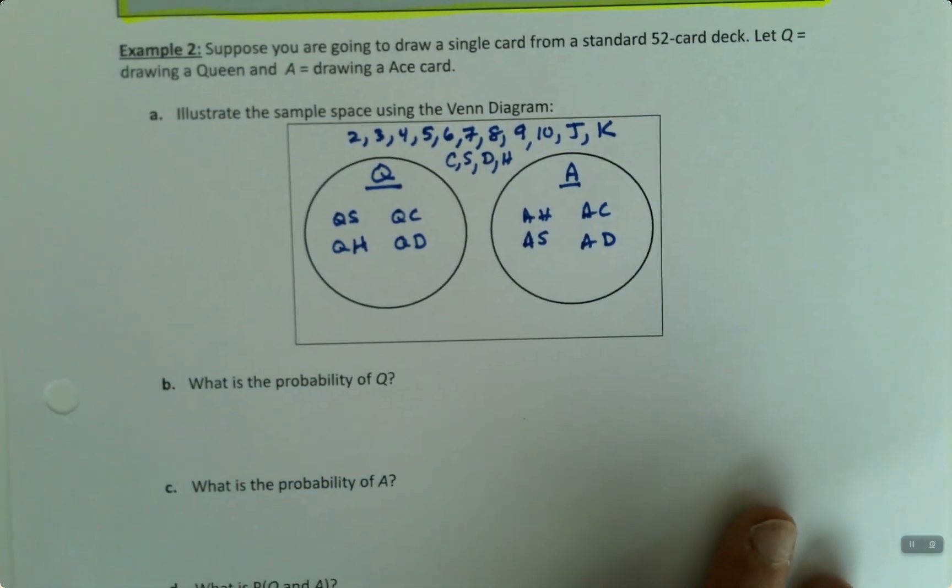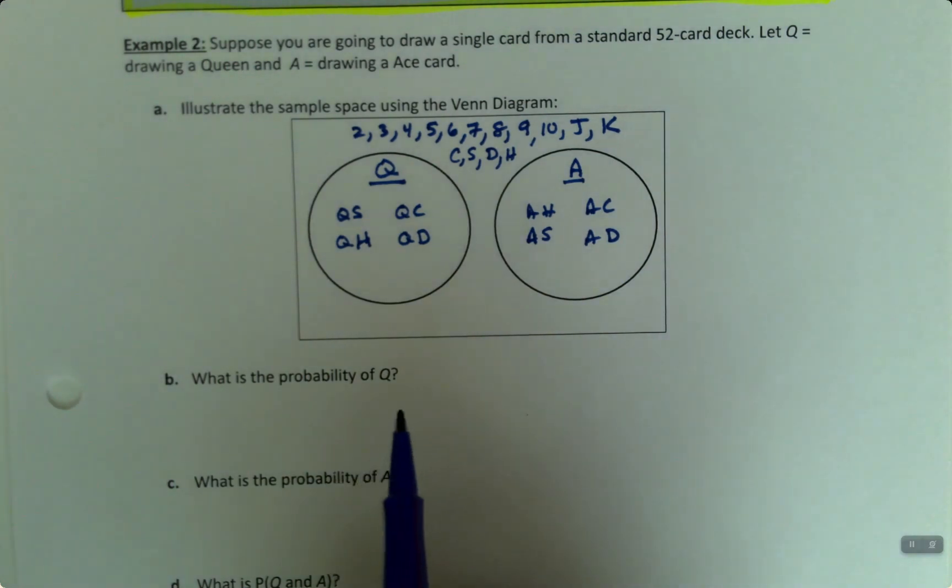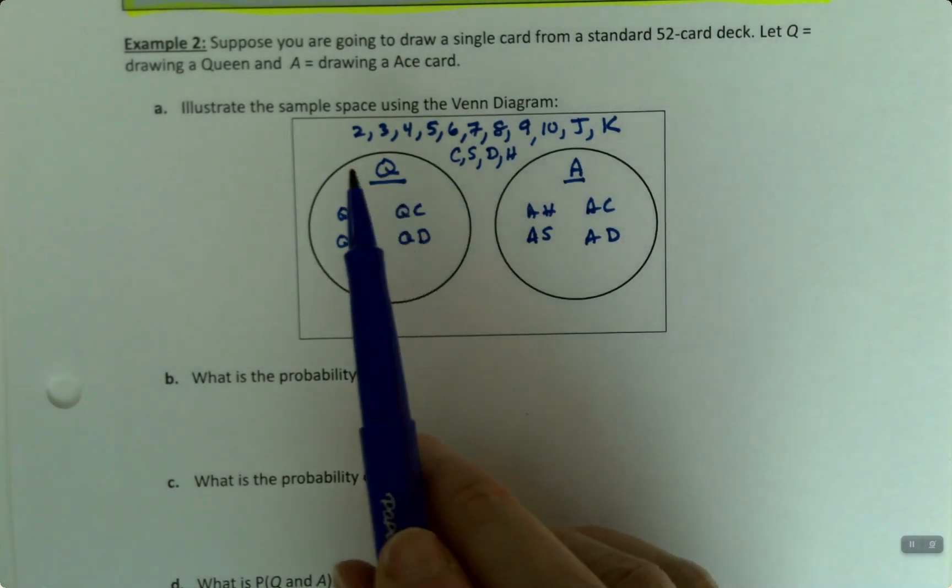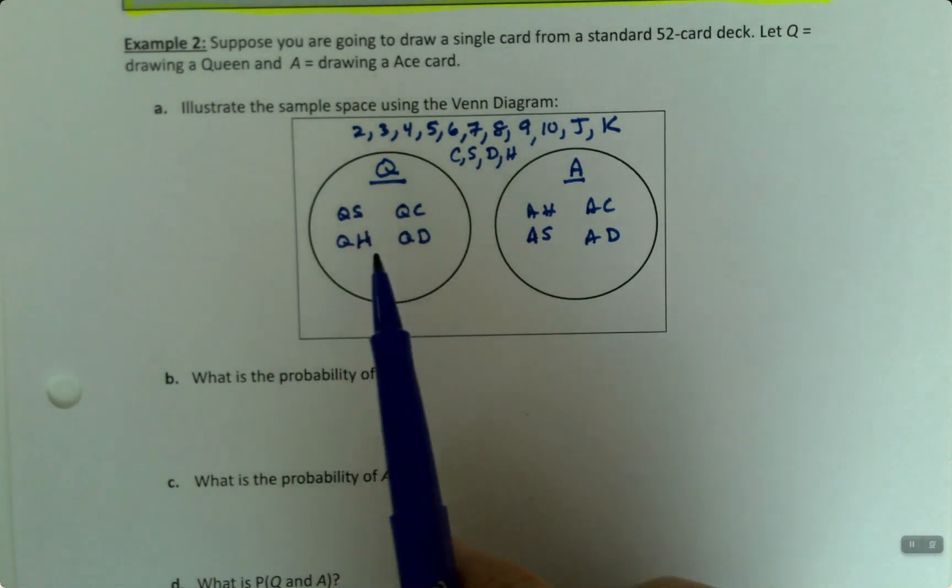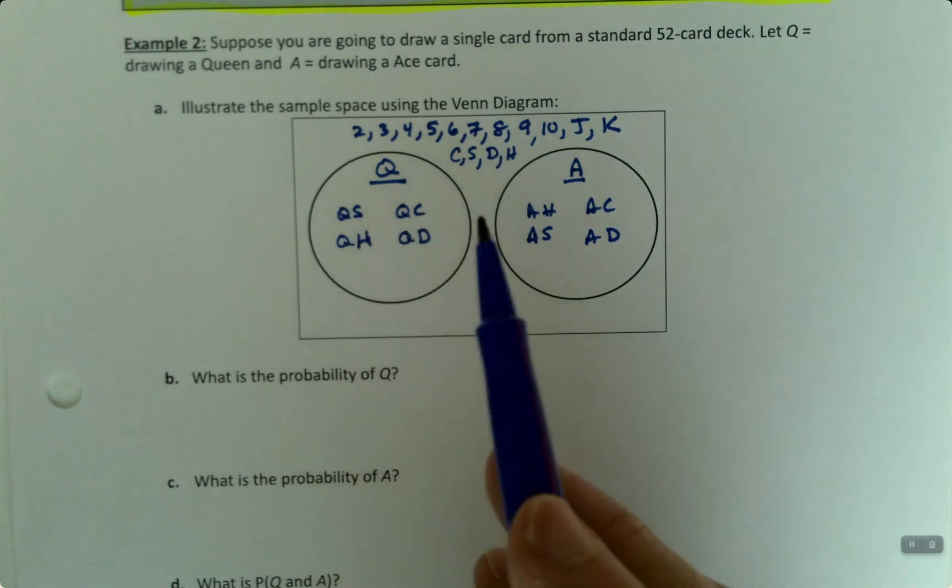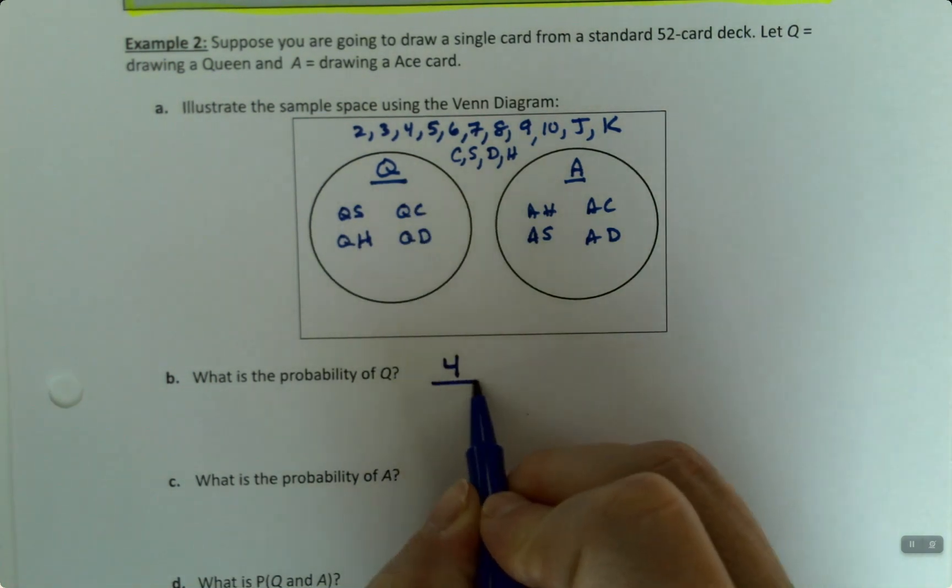This should be pretty straightforward. What is the probability of Q? Well, there's four items in Q, right? The queen of spades, queen of hearts, and so on. So that makes four out of 52.